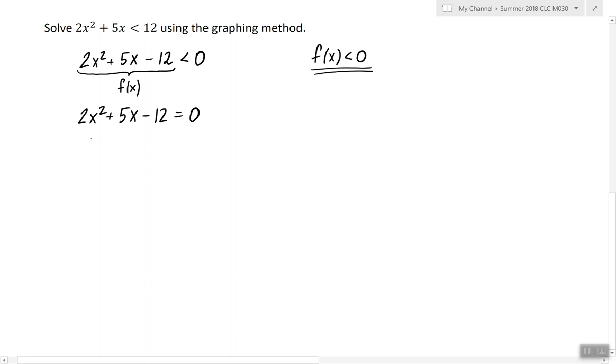This time we can try and factor this one. So 2x minus 3, x plus 4 seems to work. And the following are the x-intercepts: x = 3/2 or x = -4.